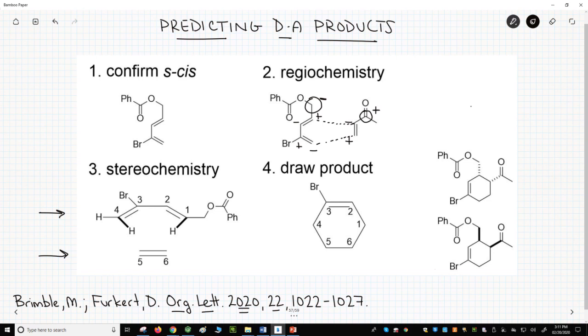The endo effect favors having R groups with pi bonds, like our ketone, in the back position. The remaining substituents are hydrogens.